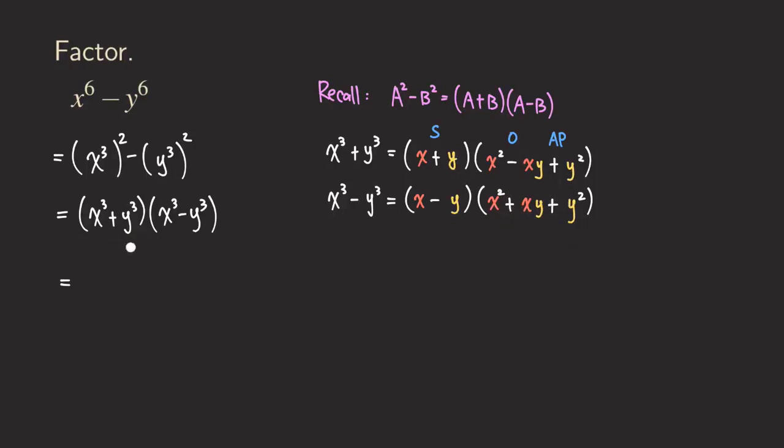And so once we have those two expressions, we can really just put them together because we already factored the x cubed plus y cubed, and then also the x cubed minus y cubed. So the final answer would just be x plus y, and then we get x squared minus xy plus y squared. And then the other one is x minus y. So we get x squared plus xy, and then plus y squared. And then we are finished.